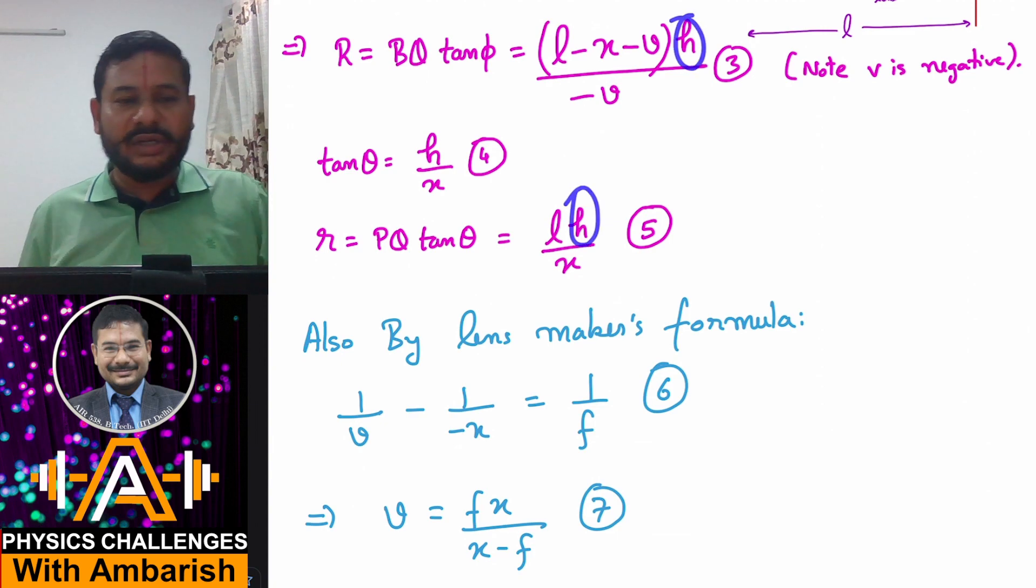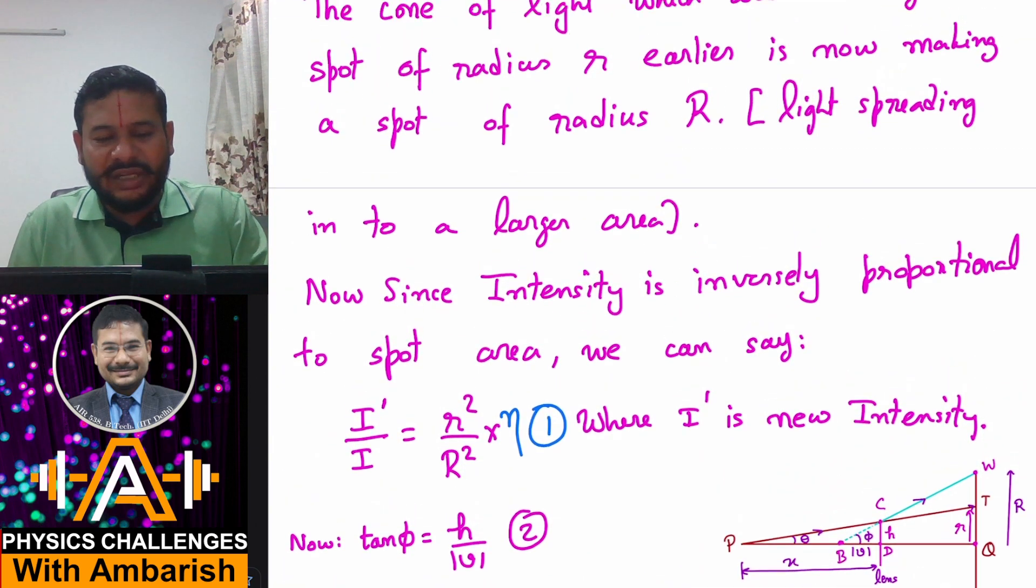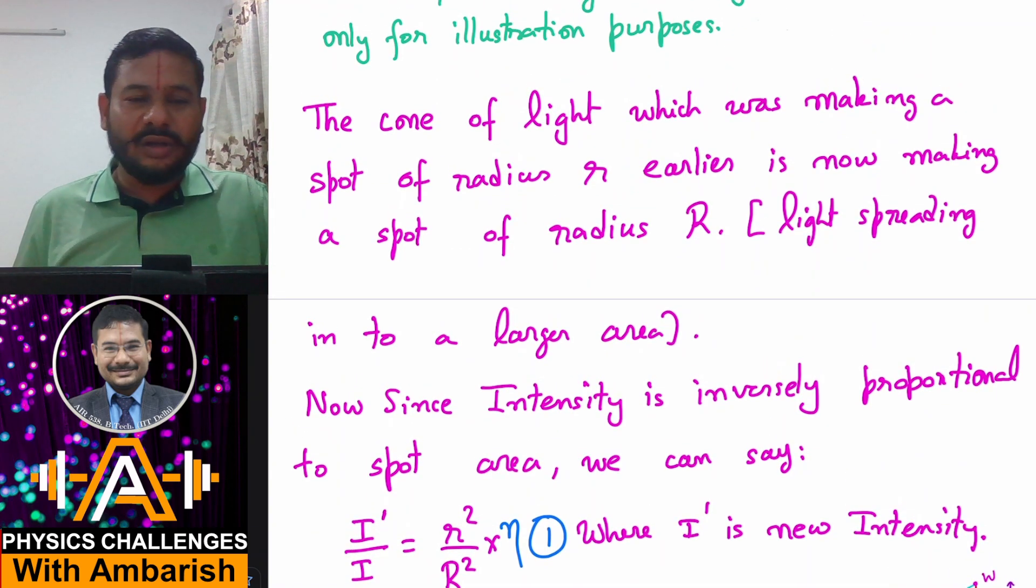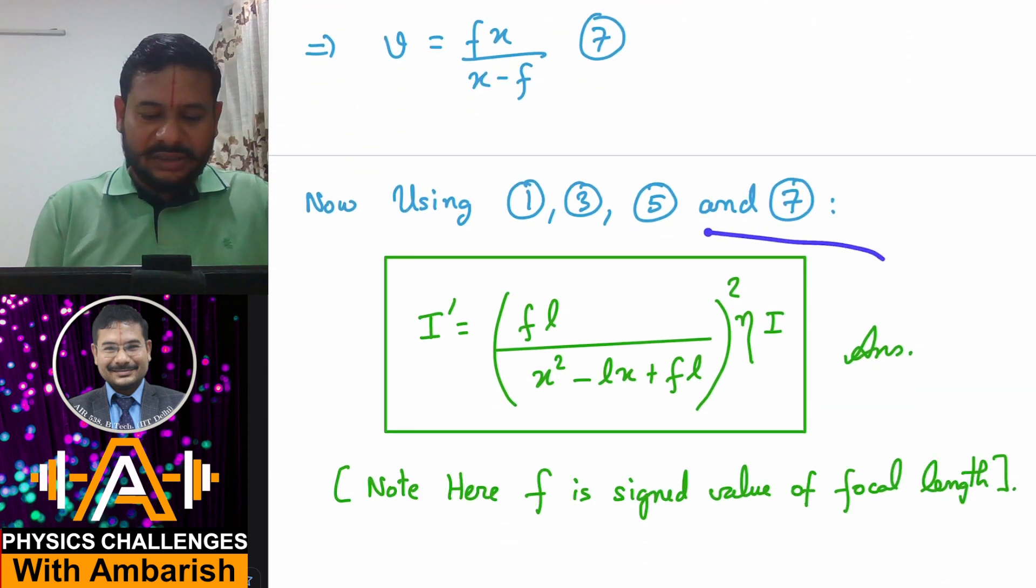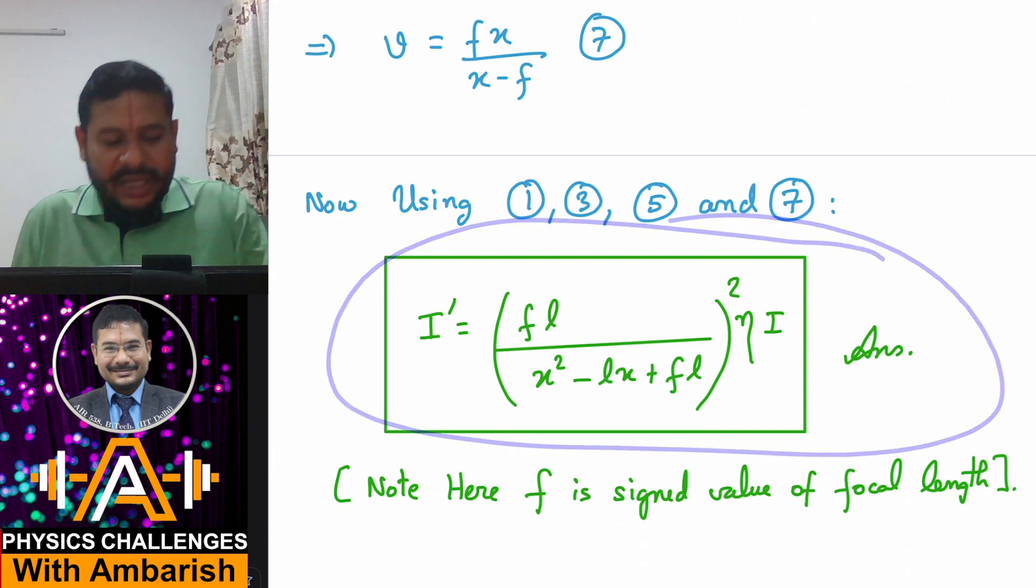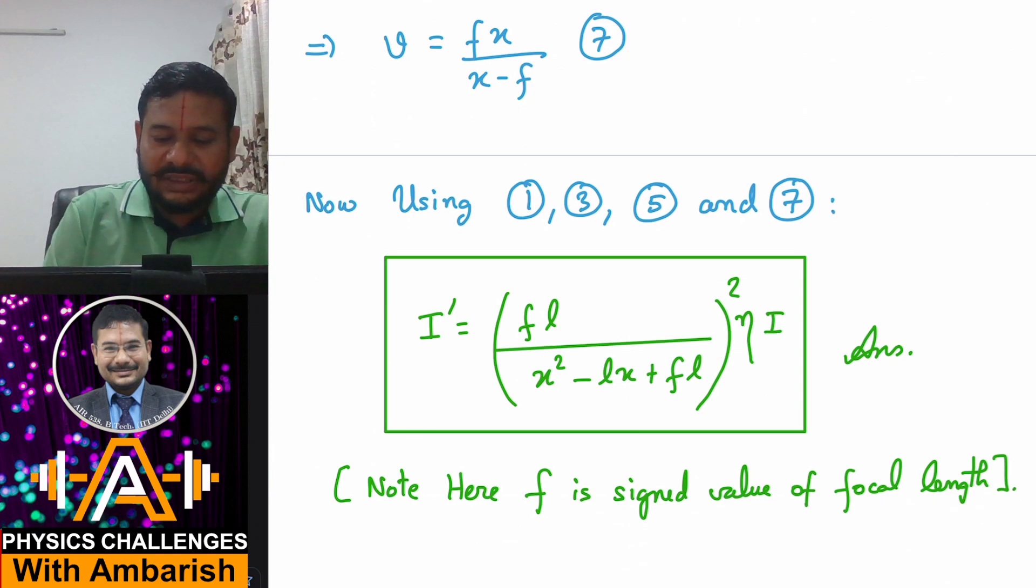Now just put in this equation and we will get the final answer. If you calculate that, it comes out to be I' equals FL upon X² minus LX plus FL whole squared times eta times I. So this is our final answer.